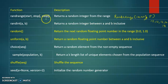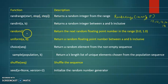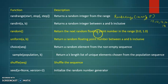These two functions are different. With randrange, we can specify steps. The next one is the random function — it returns a random floating point number between 0 and 1.0, which is a fractional number.